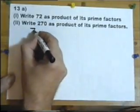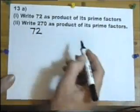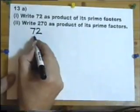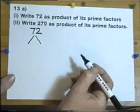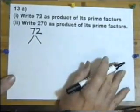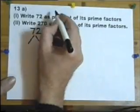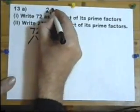So we do what I call a factor tree, a prime factor tree, by using these branches. And we need a prime number that goes into 72. Well, 2 is a prime number, so is 3, so is 5.